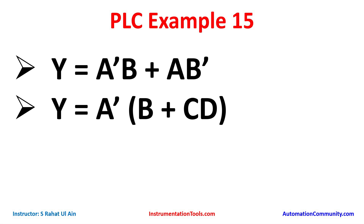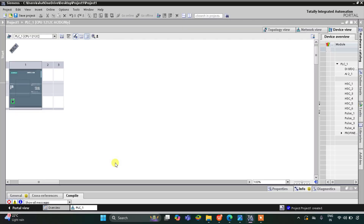For y = a'b + ab', we use a normally closed contact for a and connect it in series with b as a normally open contact. Then we connect that in parallel with ab'. For ab', we use a normally open contact for a and a normally closed contact for b. Let's move to TIA Portal where we will draw the ladder diagram for this boolean expression.